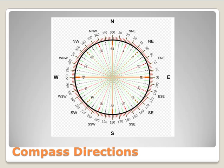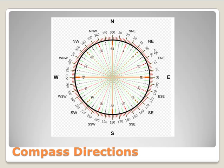To understand metes and bounds, we need to review compass directions. Just like longitude, which is 360 degrees around a circle, zero degrees and 360 degrees are both due north. Then 90 degrees is east, 180 degrees is south, and 270 degrees is west.